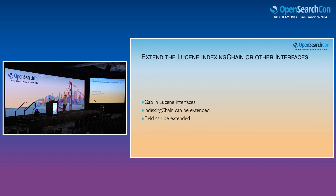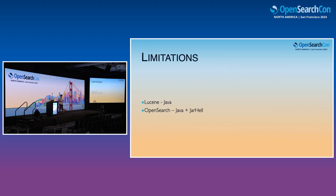There are some solutions around that. Obviously we can do ugly hacks and get both of those working — that was done. But if you want to think forward, we can also make some improvements in the Lucene indexing chain or other interfaces to make it easier to extend to things like Parquet.